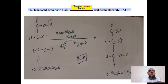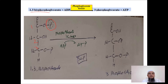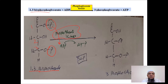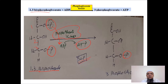Example one: 1,3-bisphosphoglycerate is a three-carbon compound with phosphates at positions 1 and 3. With the enzyme phosphoglycerate kinase, the position-1 phosphate attaches to ADP to make ATP, and 1,3-bisphosphoglycerate is converted into 3-phosphoglycerate. This is substrate level phosphorylation. Example two: phosphoenolpyruvate, a three-carbon compound with a phosphate at position 2, is converted to pyruvate by pyruvate kinase. The phosphate attaches to ADP to form ATP. This is another example of substrate level phosphorylation.